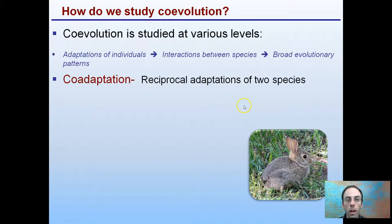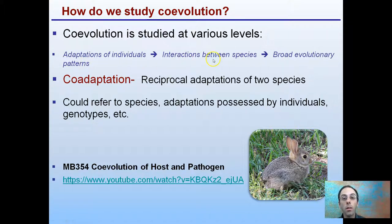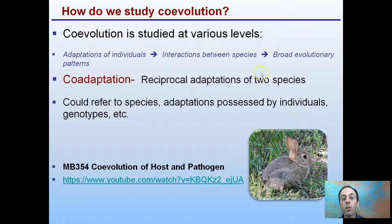So how do we study coevolution? Coevolution is studied at several different levels: we have adaptations of the individual to investigate, interactions between species, and broad evolutionary patterns. This is different from coadaptation, which refers to adaptations of certain species over a much shorter term.